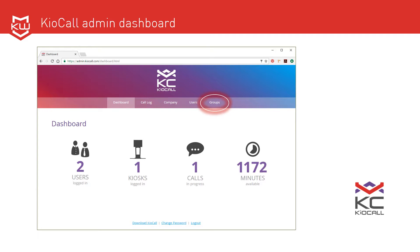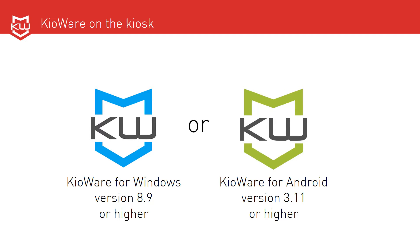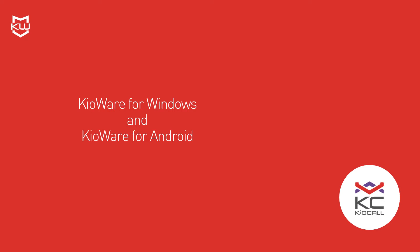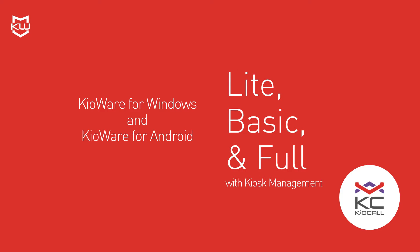To allow a kiosk user to place or receive calls, the kiosk needs to be running KioWare for Windows version 8.9 or higher, or KioWare for Android version 3.11 or higher. KioCall works with all models of KioWare for Windows and KioWare for Android: Light, Basic, and Full with kiosk management.